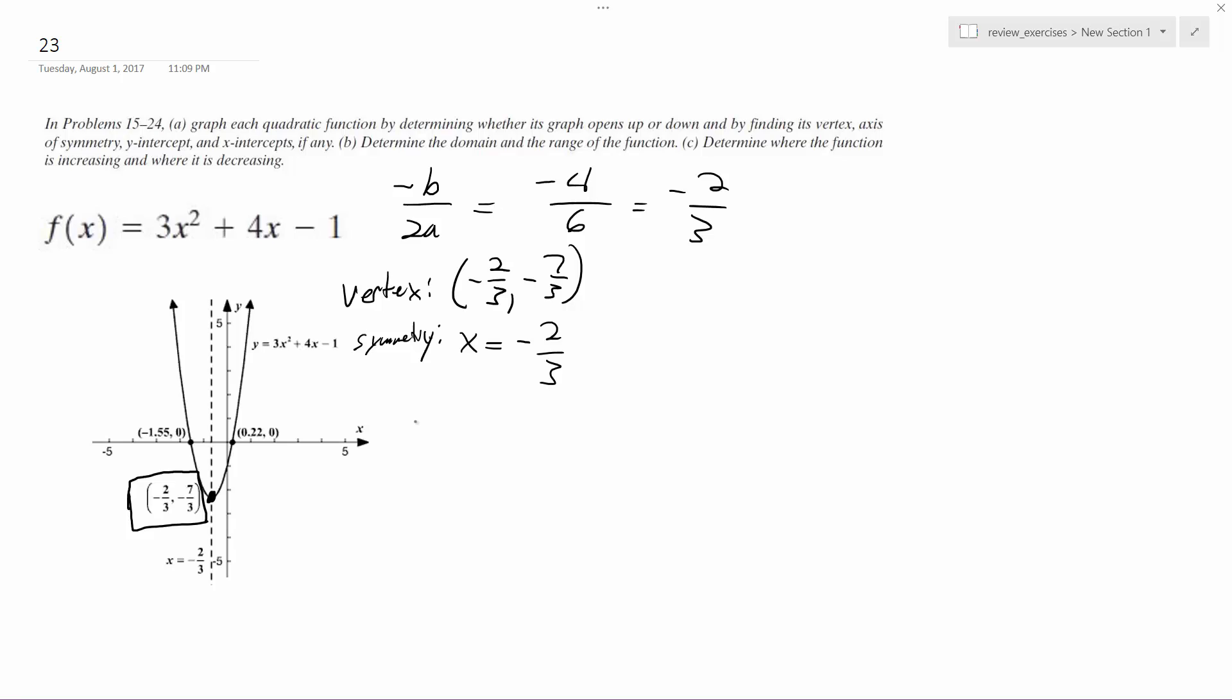All right, so y intercepts - solve for it, and what you end up getting out is approximately negative 1.55 comma 0 and 0.22 comma 0. You can use the quadratic function for that. And then the x intercept - excuse me, this is the x intercepts. And then the y intercept, you just plug in 0 for x, and then you end up getting 0 negative 1, so it's 0 negative 1.